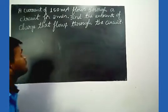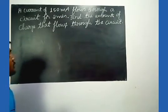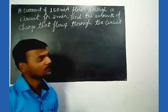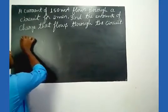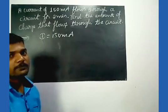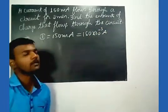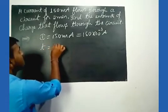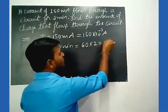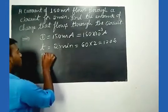Let us discuss the first problem: a current of 150 milli ampere flows through a circuit for two minutes — find the amount of charge that flows through the circuit. Here you need to find the amount of charge Q. What is given: current is 150 milli ampere, which we convert to 150 × 10 to the power minus 3 ampere. Time is 2 minutes, converted to 120 seconds.